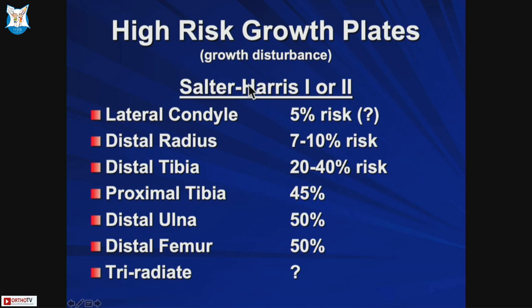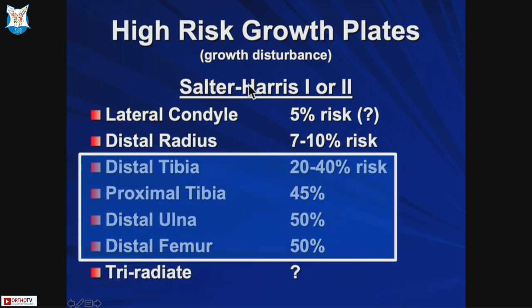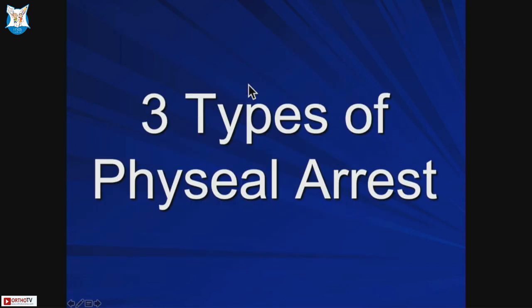The high-risk growth plates are the distal femur, proximal tibia, distal tibia, and distal ulna. The distal femur and proximal tibia contribute around 50% of growth. Distal ulna is also 50% but we don't see the injury that often. The reason for the high growth arrest rate in the distal ulna is that it takes significant force to fracture it, so high-energy injury leads to high rate of growth arrest.